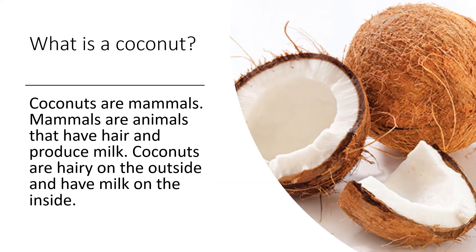I want to note that this next argument is not true — it is completely false, but I thought I'd throw a funny one in there just for fun. The question is: what is a coconut? Here's the argument: coconuts are mammals. Mammals are animals that have hair and produce milk. Coconuts are hairy on the outside and have milk on the inside.